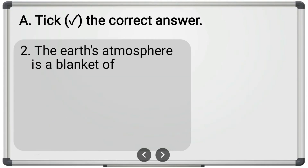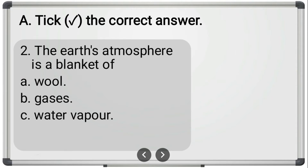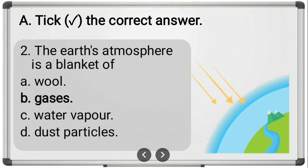The second question is: 'The earth's atmosphere is a blanket of?' The options are wool, gases, water vapor, and dust particles. The earth's atmosphere is a blanket of gases, so option B is the correct answer.